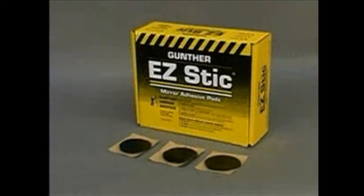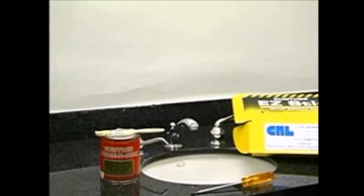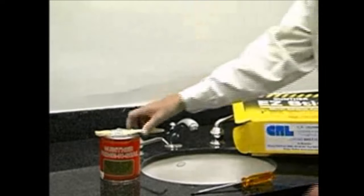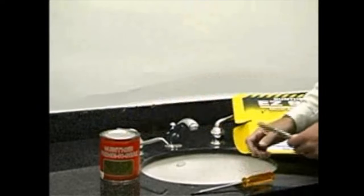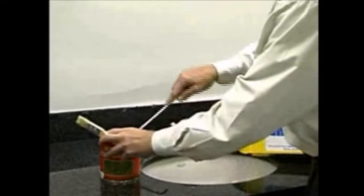The last Gunther product we will demonstrate is the newest mirror mastic to be introduced to the industry in years. EasyStick mirror adhesive pads are 3-inch diameter pads of cured asphalt-based mastic that provide instant grab to the substrate and are ideal for vanity bathroom mirrors. Simply apply the EasyStick pad to the wall, remove the release liner paper, and press the mirror into place. The pads come packaged 150 to a box.